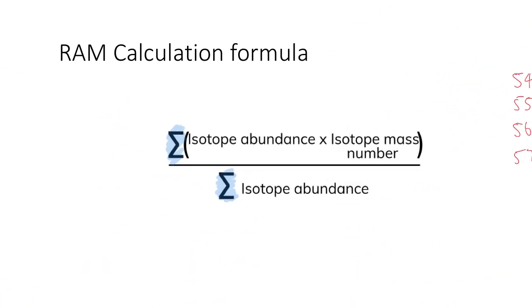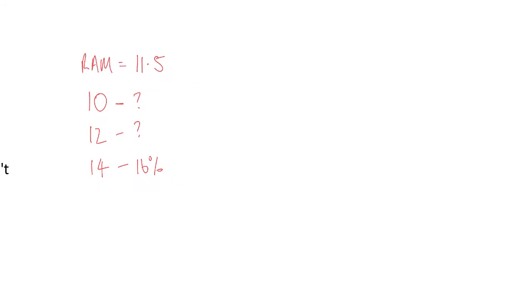So instead of solving for RAM, you're given the RAM and you have to work out the isotope abundance of it. How do you do that? Let's have a look. Here's a question here. There's an RAM of 11.5, there's some amount of 10, some amount of 12, and we know that 14 is 16% of it. So a couple of concepts first.